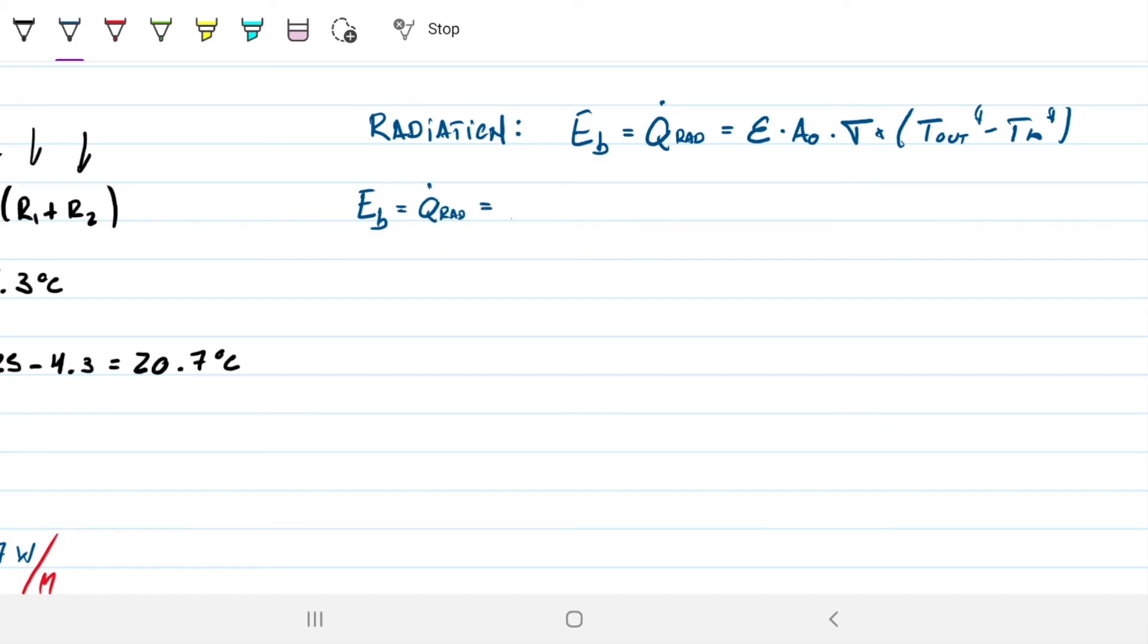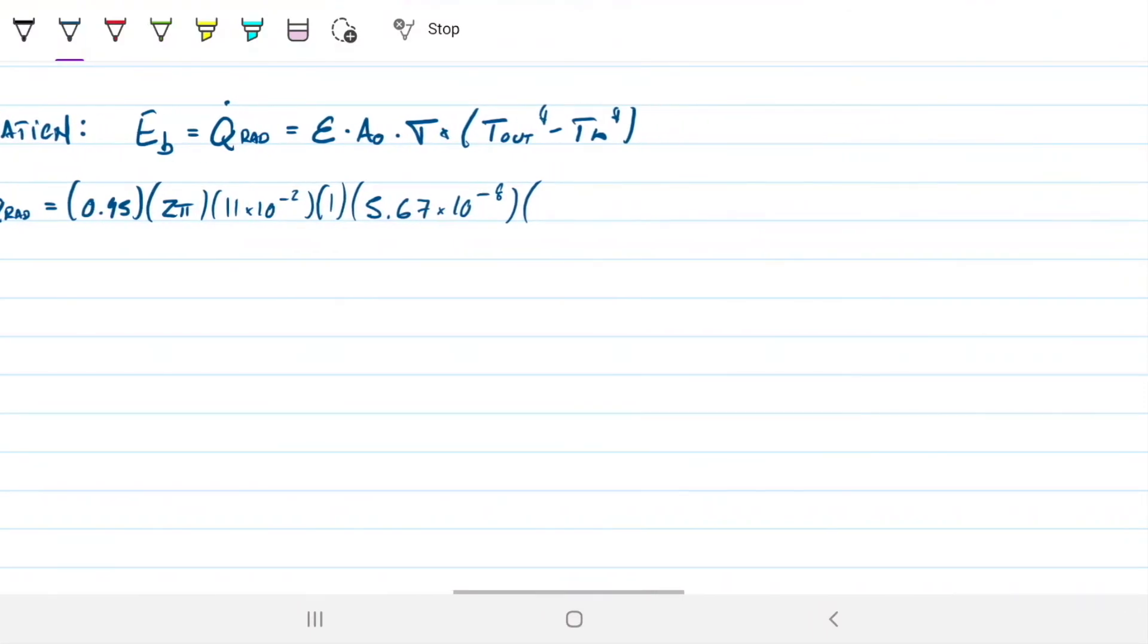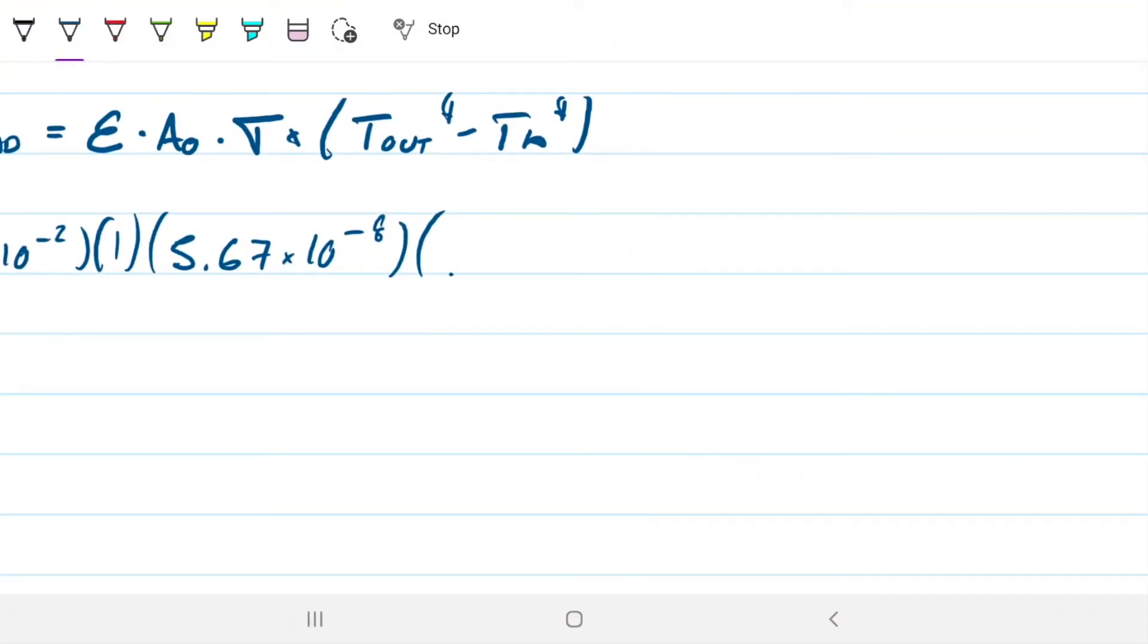So this is 0.95 over here. Here, this is again the 2 pi times 11 centimeters times the 1. Then this is 5.67 times 10 to the minus 8. And here, we just need to remember that this, we cannot plug this in as Celsius. We have to plug it as Kelvin. But what I generally do in these cases when I know I'm going to be doing this several times is just do it. It's 20.7 plus the 273, and then add to the fourth. That's how I plug in my calculator anyways.